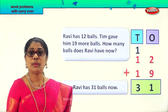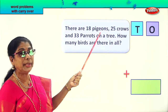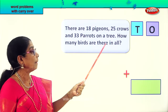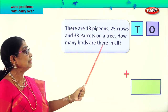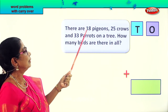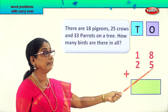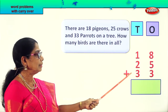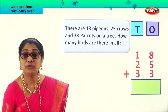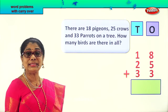Did you enjoy the word problem with carryover? Let's get on with another new problem. There are eighteen pigeons, twenty-five crows, and thirty-three parrots on a tree. How many birds are there in all? Let's write down the numbers: pigeons — eighteen, crows — twenty-five, parrots — plus thirty-three. We're going to find the total number of birds. First we'll add all the ones, then go to the tens.